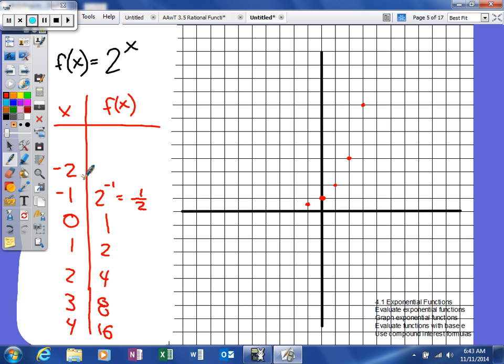Negative 2 will basically have 2 to the negative 2 power, which would be 1 over 2 squared, which is 1 fourth. And then negative 3 - 2 to the negative 3rd, which would be 1 over 2 cubed, which is 1 eighth.